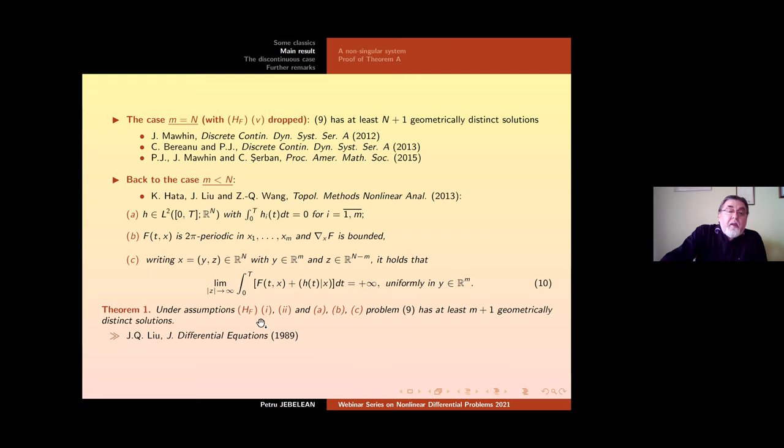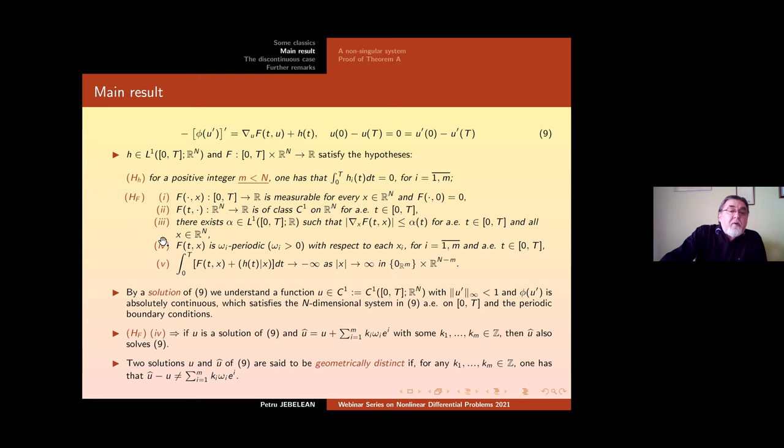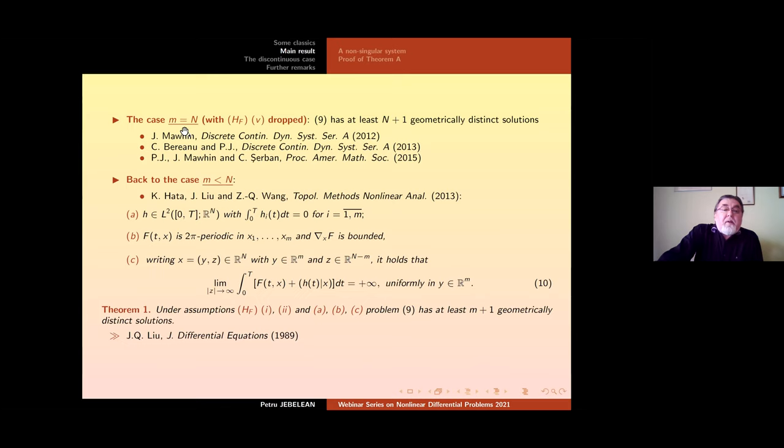And now let us be concrete. These are the hypotheses for our main result. Now a little discussion. Why just this one? First in the case m equal to n, of course with HF5 dropped, problem 9 has at least n+1 geometrically distinct solutions and this was proved by Jean Mawhin in 2012 by reducing the problem to the Hamiltonian system and applying a generalized saddle point theorem due to Szulkin for indefinite functionals.